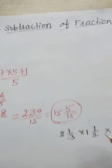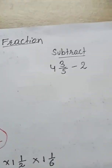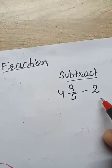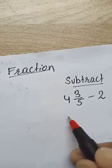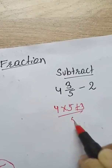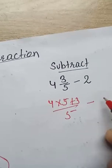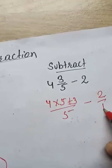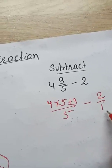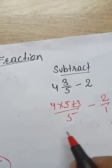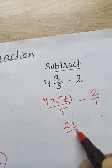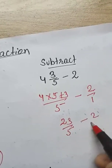Next, subtraction: here a mixed fraction minus 2. First of all, write 4 multiply 5 plus 3, upon 5, minus 2 upon 1. Write the whole number 2 as a fraction with the same denominator. So 4 times 5 is 20 plus 3 gives 23 upon 5, minus 2 upon 1.